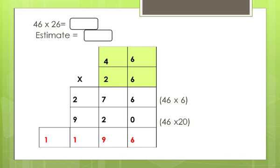So you get the partial products. Add the numbers together. 6 plus 0 is 6. 7 plus 2 is 9. 2 plus 9 is 11. So you get the final answer 1196.